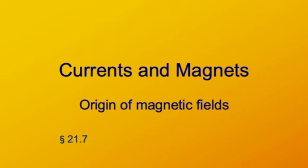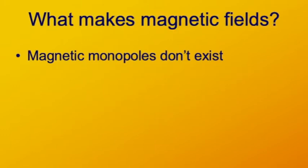Now that we've seen what magnetic fields do, let's go back a little bit and see how magnetic fields are created. Fundamentally, magnetic fields come from moving electric charges. We've already seen that magnetic monopoles don't exist, or at least we've never found one. So all the magnetic fields that we do see do not come from magnetic monopoles.